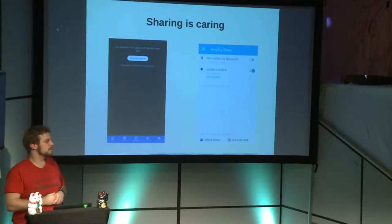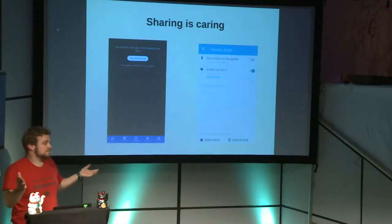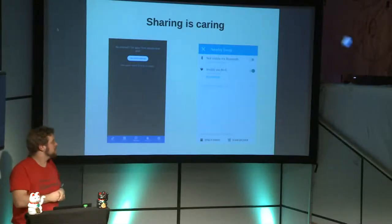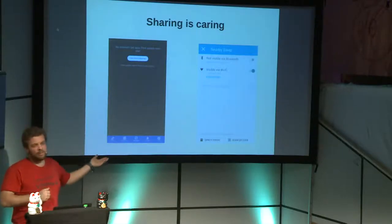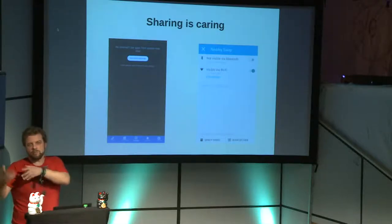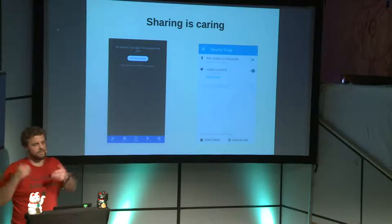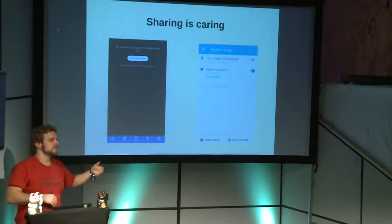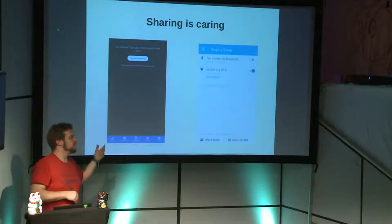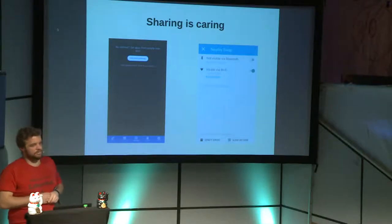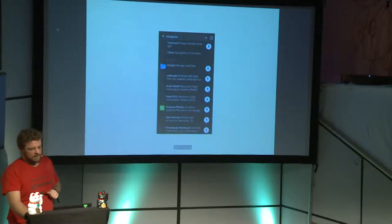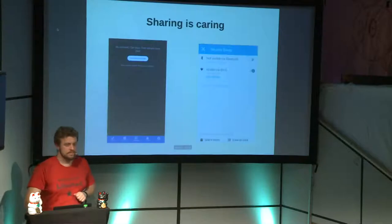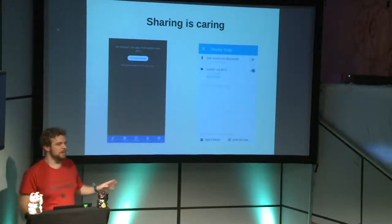This is a very powerful feature, particularly for less-developed regions or areas with less internet connectivity or where it's too expensive. Remember the Cuba story — people can go to an internet café, download from the café's repository, go home, and share the software with neighbors, friends, and family. That's a really powerful feature of F-Droid.